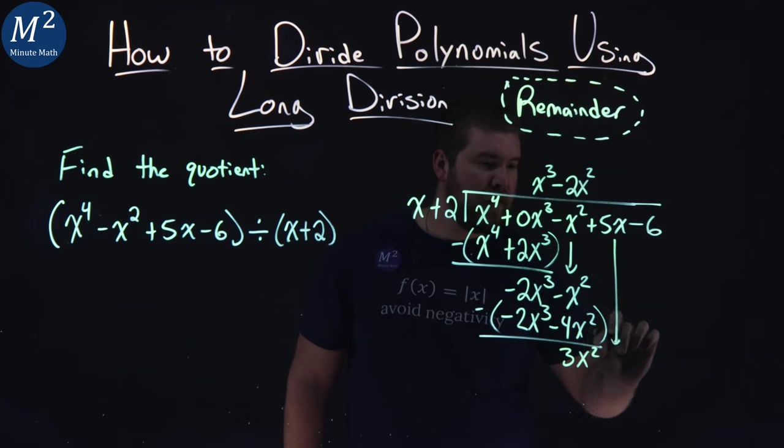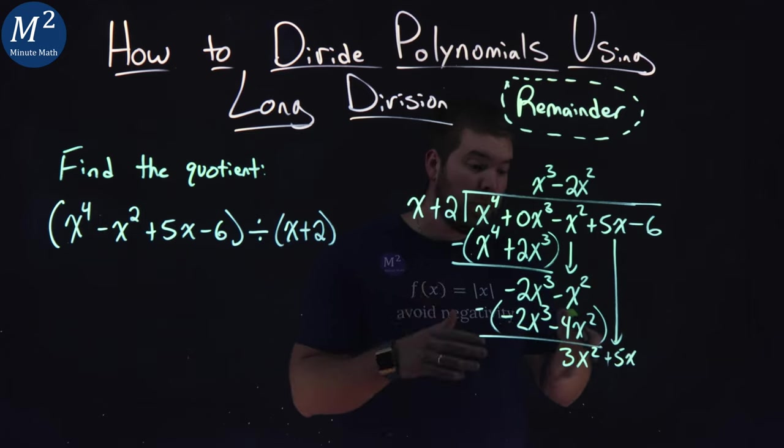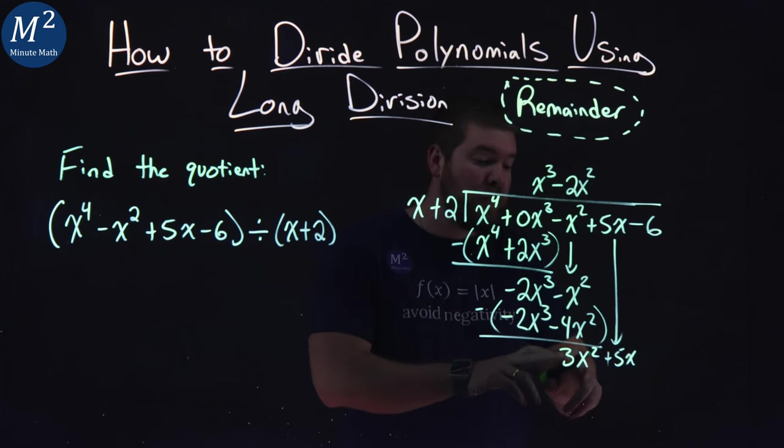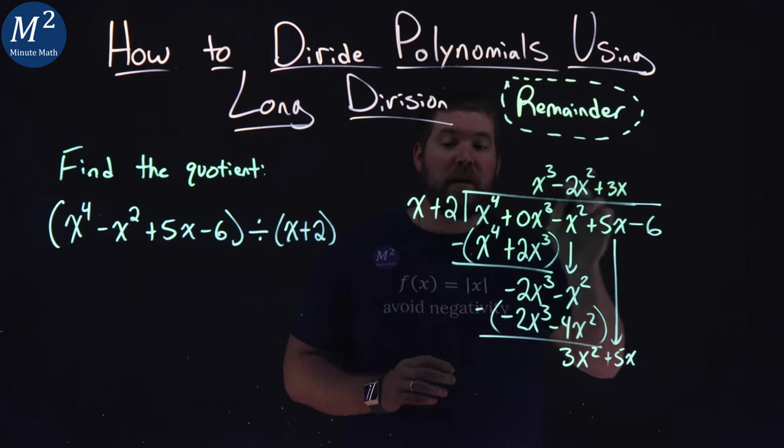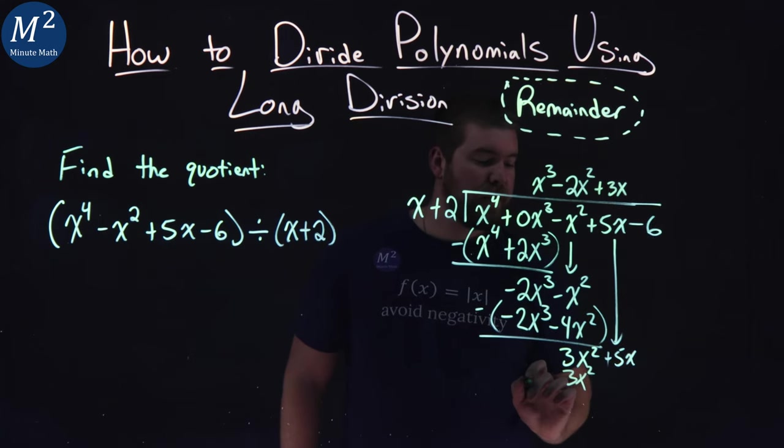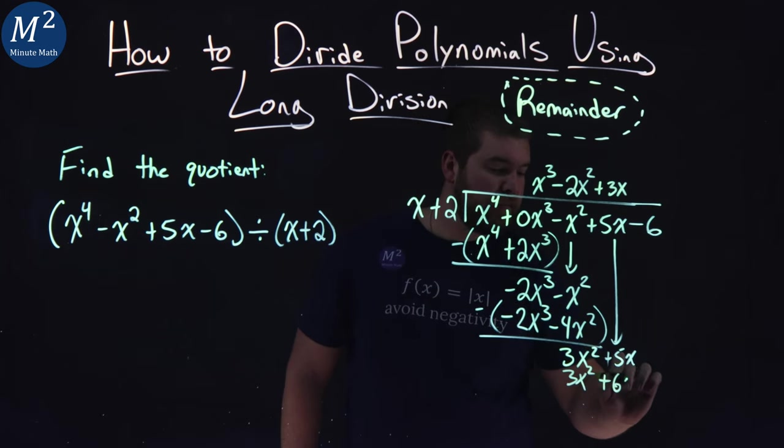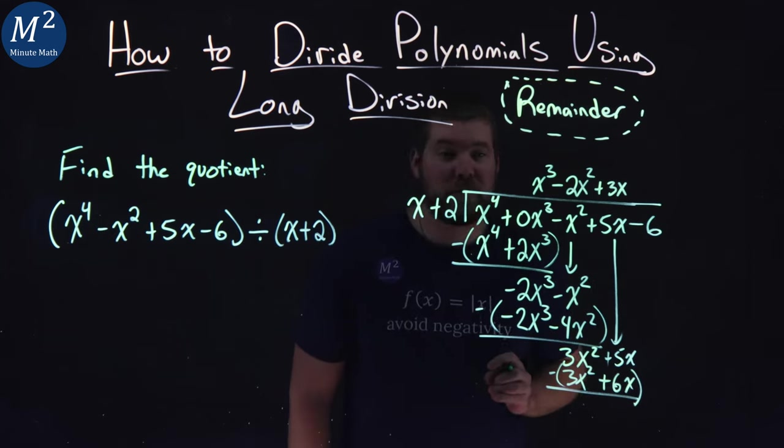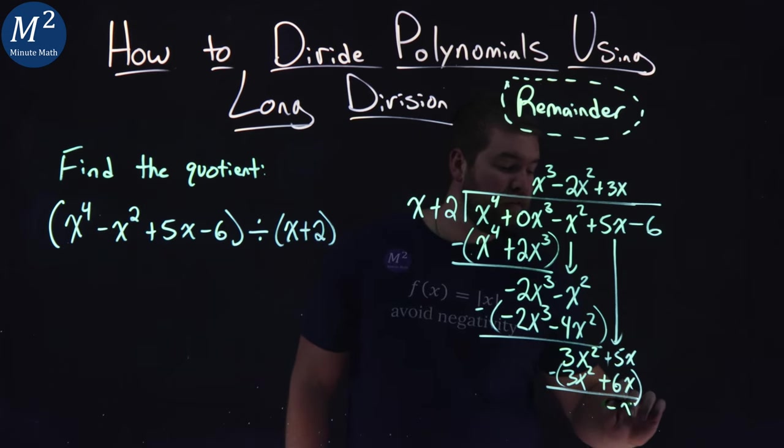From here, we want to ask the same question again. What times x gives me 3x squared? That's just 3x. 3x times x equals 3x squared. 3x times 2 is 6x. We want to subtract. 3x squared minus 3x squared cancels out to be 0, which is what we wanted. And 5x minus 6x is negative x.